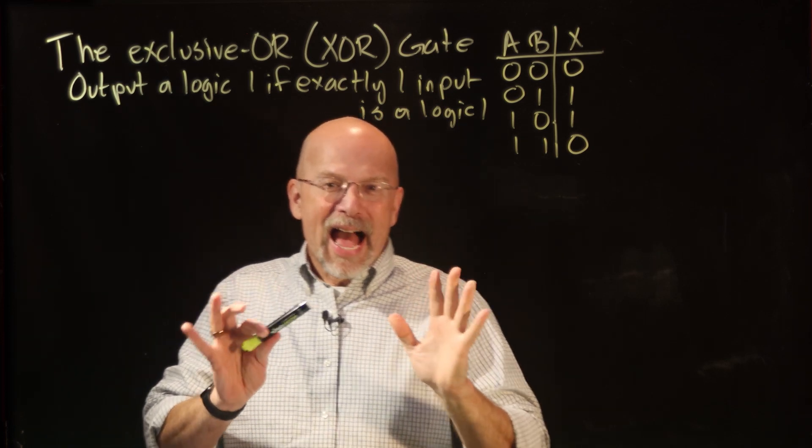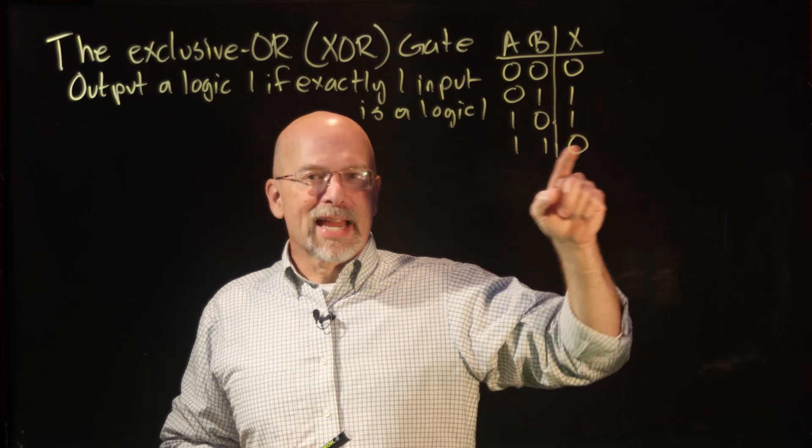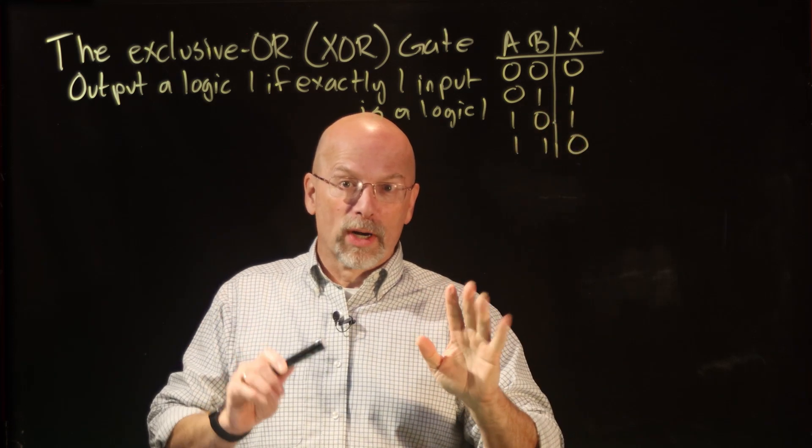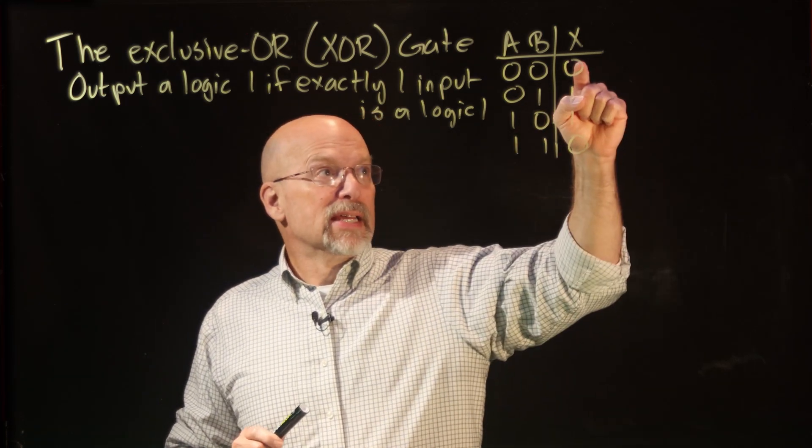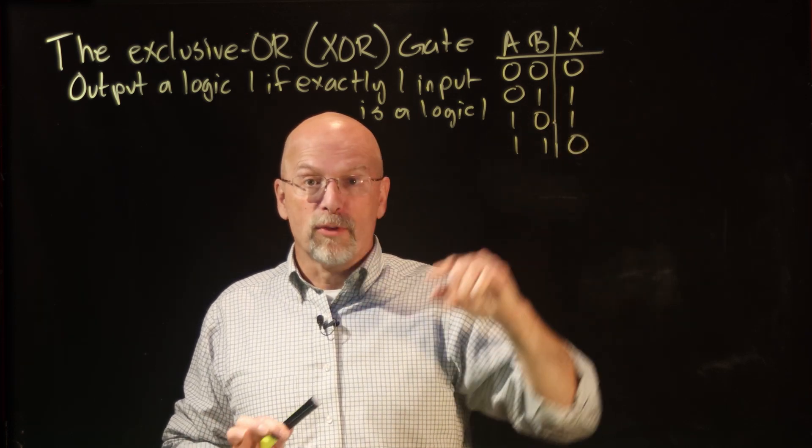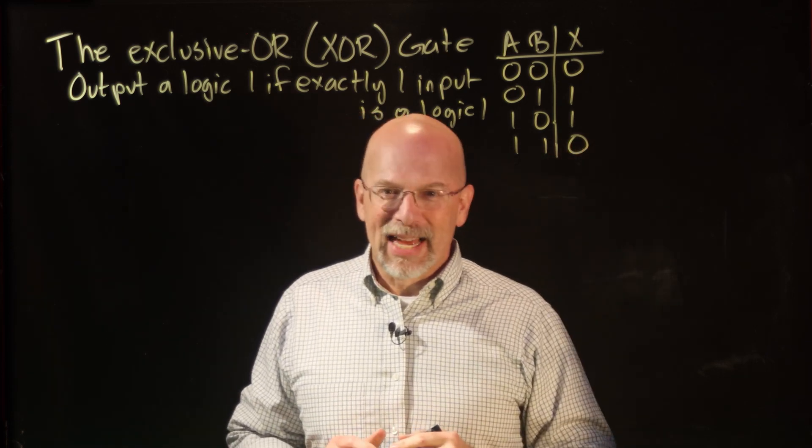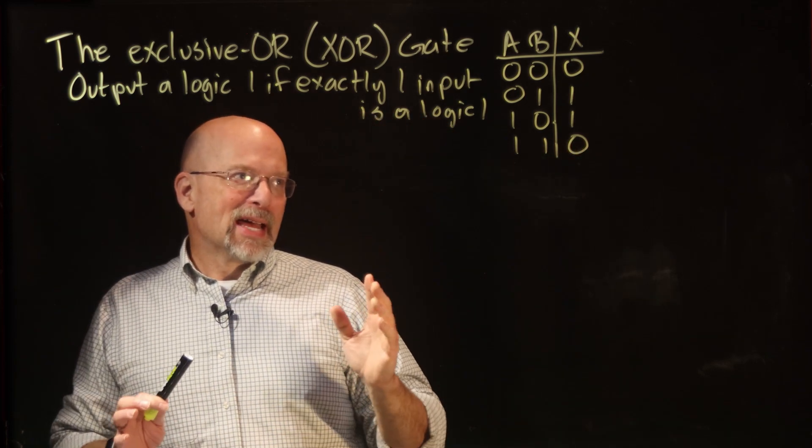You can kind of see how it might have gotten the name exclusive-OR. This looks like the two-input OR gate. The two-input OR gate is 0,1,1,1. Remember the OR gate outputs a 1 if you have a 1 at any of the inputs, and we exclude the last line.